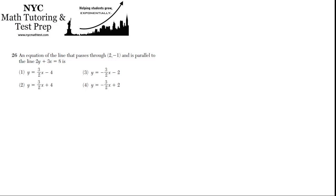Problem 26: an equation of the line that passes through the point (2, 1) and is parallel — that's a key word — to the line 2y plus 3x equals 8. So it's parallel; we want it to have the same slope as the original line.